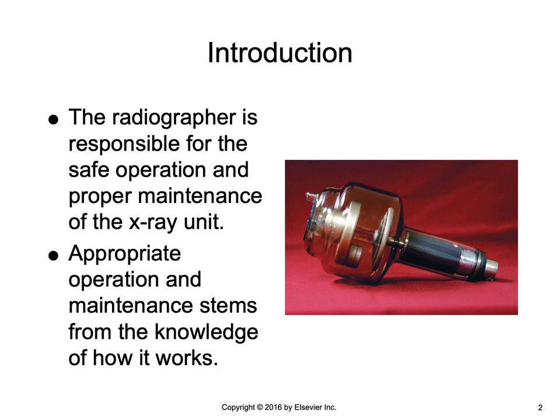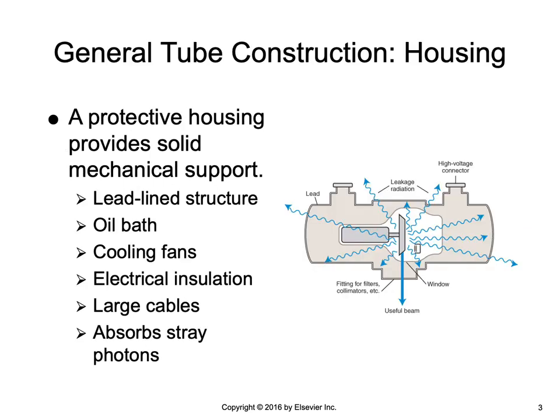This photograph shows a basic rotating anode x-ray tube. The x-ray tube is situated in a protective housing that provides solid, stable mechanical support. The housing is a lead-lined metal structure that also serves as an electric insulator and a thermal cushion for the tube itself. X-ray production is a rather inefficient process and much of the electrical energy that goes into it is converted to heat.